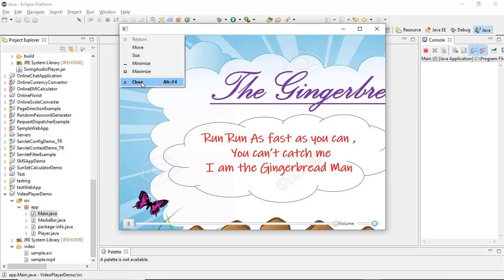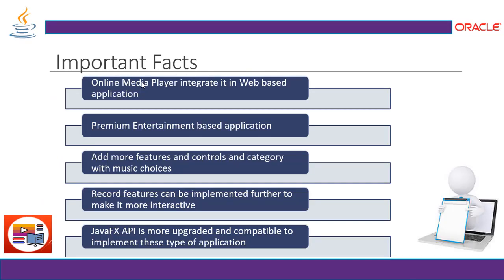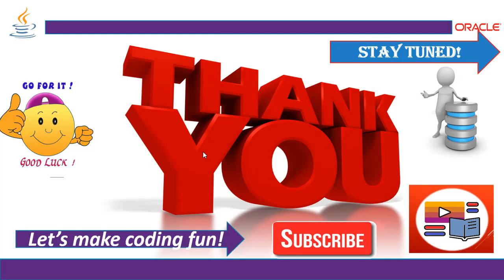It's an offline application, but you can embed it in a web application and make it online. Important facts: online media player integration in a web-based application is possible. You can add more features, controls, and categories with music choices for a premium entertainment application. Record features can be implemented further to make it more interactive. JavaFX API is more upgraded and compatible for these types of applications compared to the JMF API framework. Thank you so much for watching — please subscribe and stay tuned for more practice project ideas using Java. Let's make coding fun!